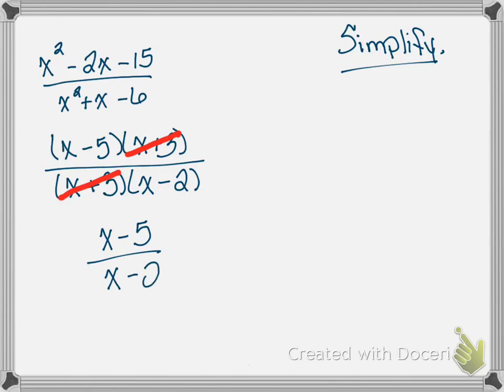My final answer is x minus 5 over x minus 2. I want to remind you that x minus 5 is a unit and x minus 2 is a unit, so the two x's cannot cancel. If you're not sure, plug in a number — if x equals 2, you get negative 3 over 0, which shows they're not the same thing. You can't cancel those x's because they're binomials and binomials are a unit.